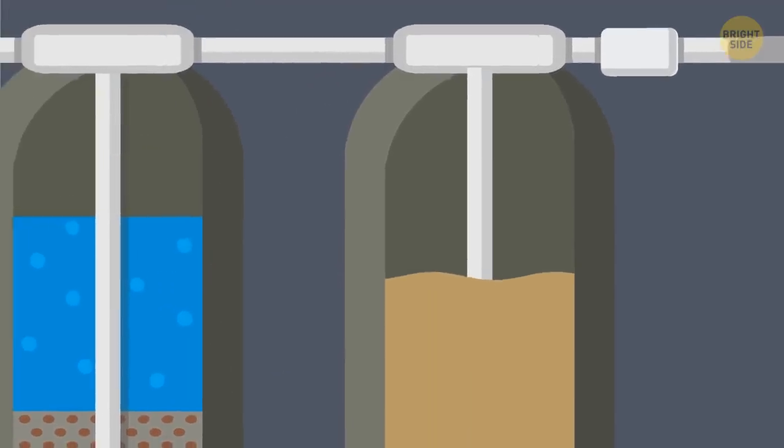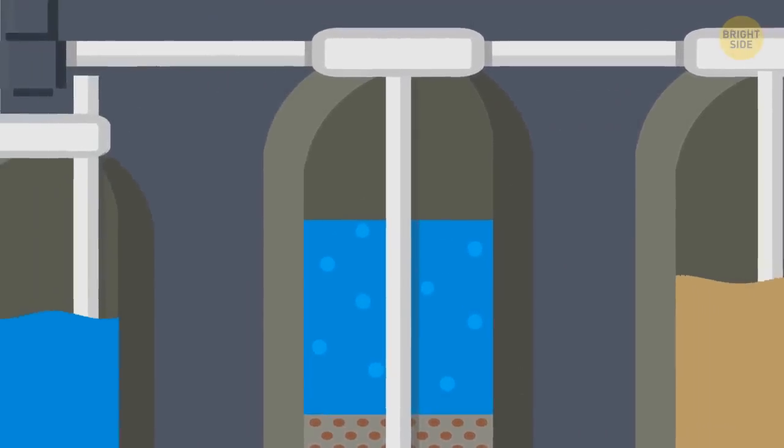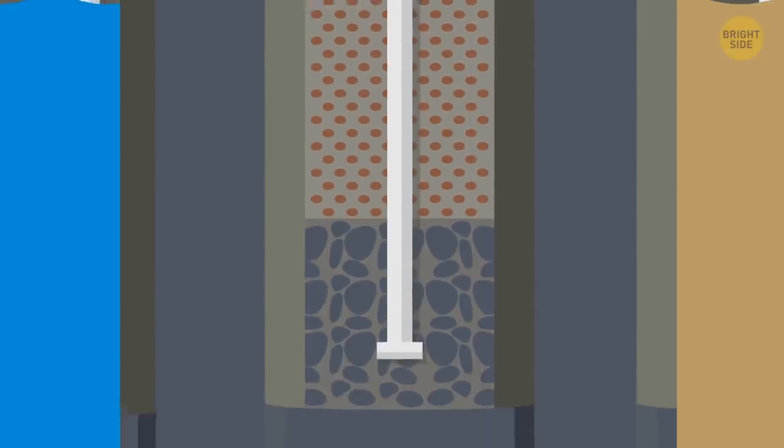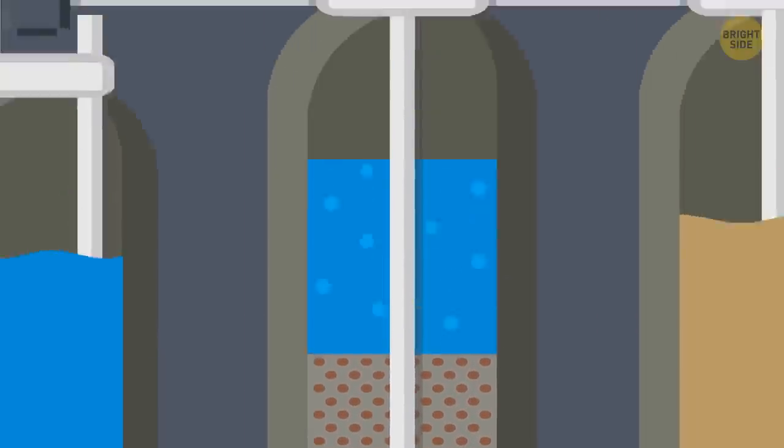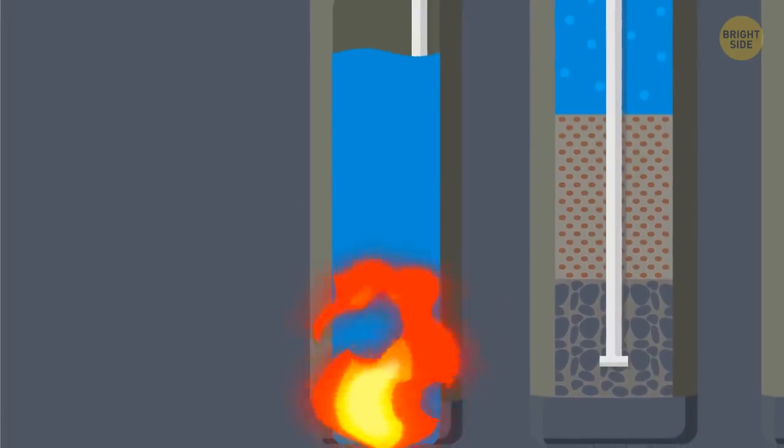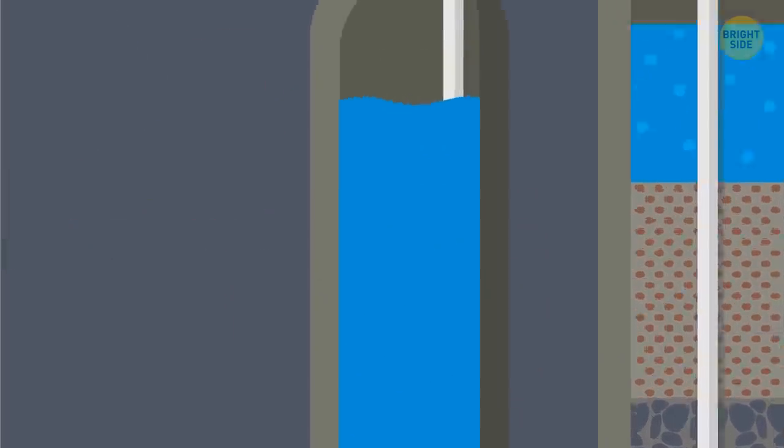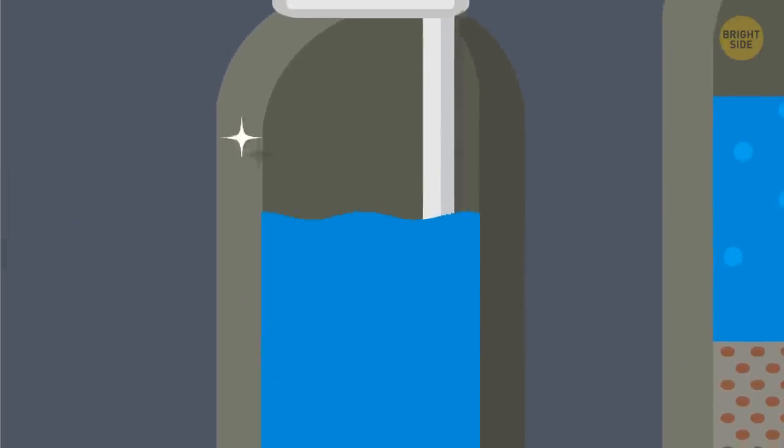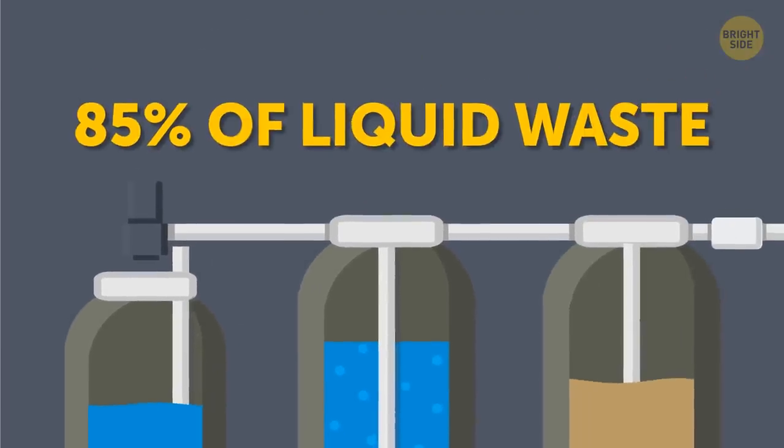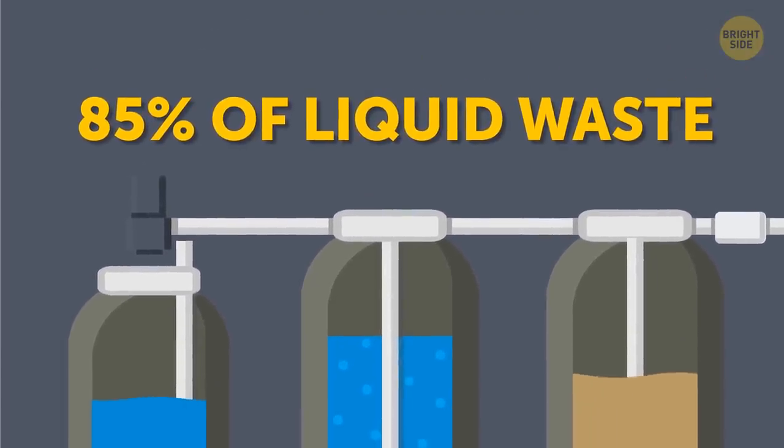From here, water enters a special separator where the liquid is cleaned of odors and passes through several levels of filtration. After that, the water is heated and sanitized. And voila! We have clean water. In fact, 85% of liquid waste can be processed into pure water.